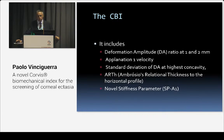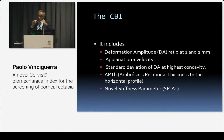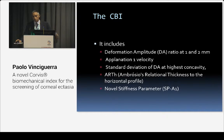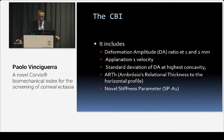The CBI includes the deformation amplitude ratio at 1 and 2 millimeters — measuring how much the total cornea deforms and how much is the deformation at 1 mm and 2 mm in comparison to the remaining area — the first applanation velocity, the standard deviation of deformation amplitude at the highest concavity, the Ambrósio relational thickness of the horizontal profile, and the novel Stiffness Parameter A1 (SPA1), which stands for stiffness parameter at first applanation.